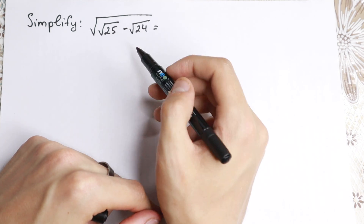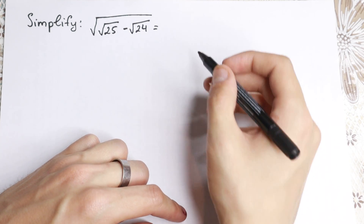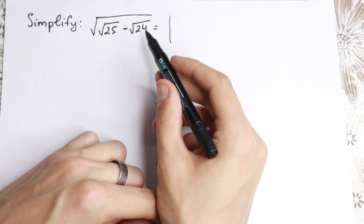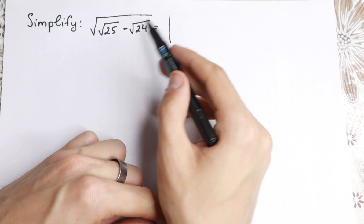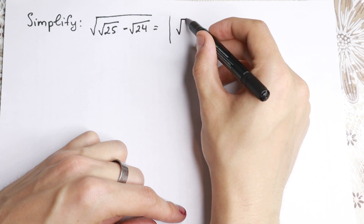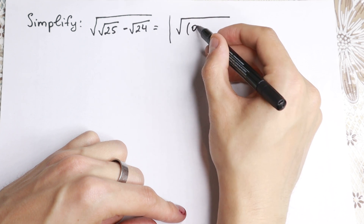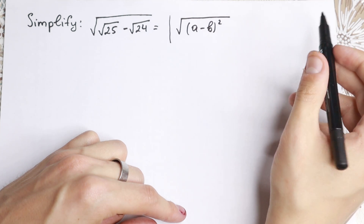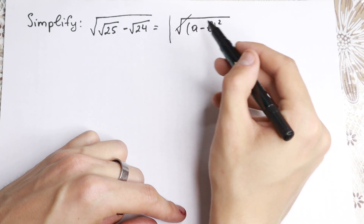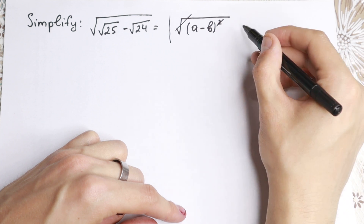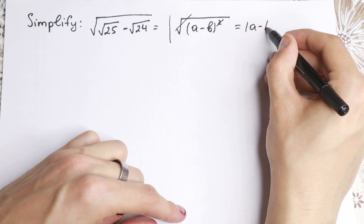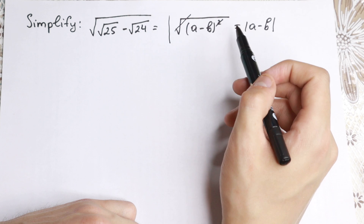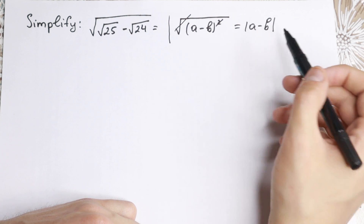Okay, we have this square root sign. How can we simplify this? I want to show you a really good trick. If you have square root of (a minus b) squared, for example, inside the square root sign, we can cancel the square and square root sign. As a result it will be equal to the absolute value of (a minus b). So the square root sign and the square disappear, and we will have an answer without a square root sign.